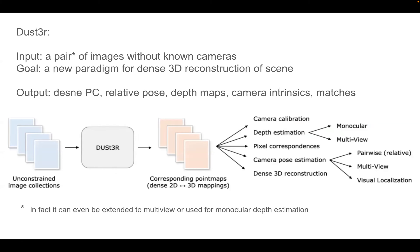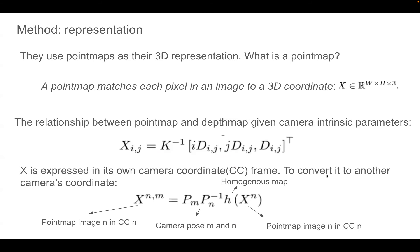So what does DUSt3R want to do? DUSt3R takes a pair of images with unknown cameras as input — it can be more than a pair, but it starts with a pair. The goal is to introduce a new paradigm for dense 3D reconstruction. The outputs cover basically all tasks in 3D vision: a dense point cloud, relative poses of the cameras, depth maps, camera intrinsics, and keypoint matches. This paper introduces a very simple way to do all these tasks that before were done with different, heavily engineered pipelines.